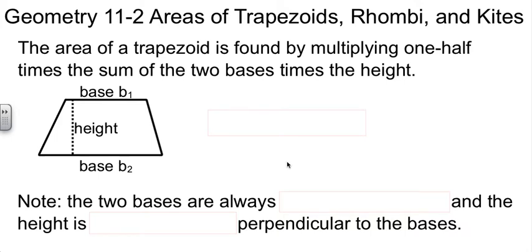This is Geometry, Chapter 11, Section 2, in which we will study the areas of trapezoids, rhombi, and kites.